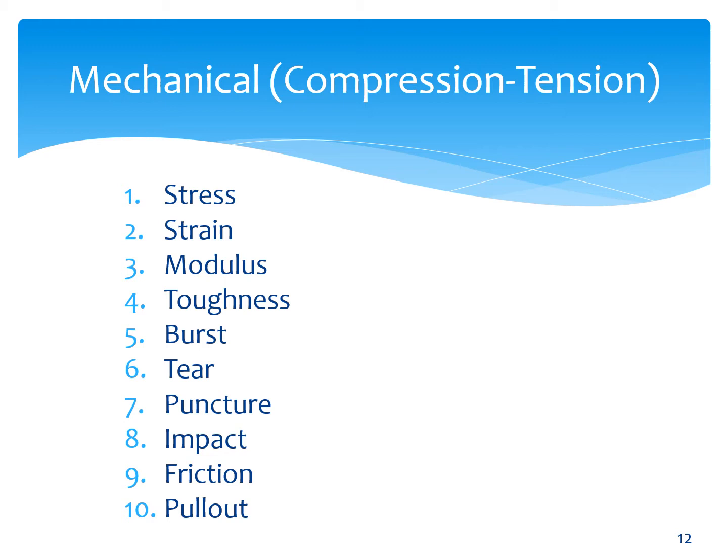Mechanical properties can be in both tension and compression: stress-strain, modulus, toughness — the area under a stress-strain curve — burst, tear, puncture, impact, friction, and pullout. The last two are sometimes even considered in the context of soil interactions.